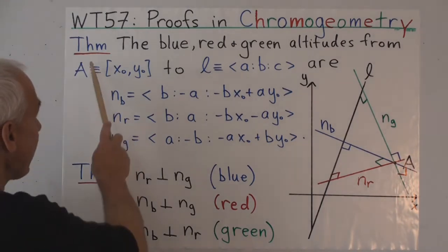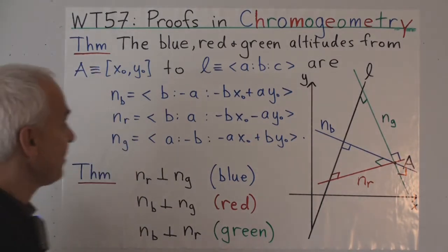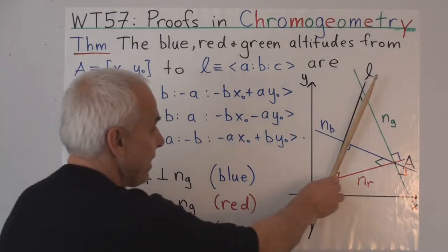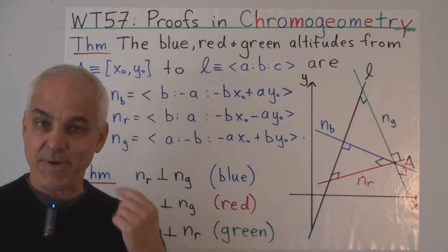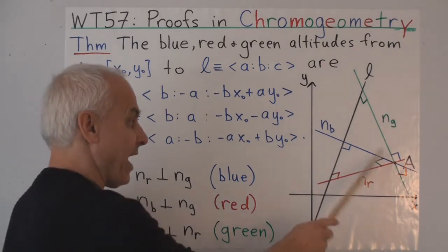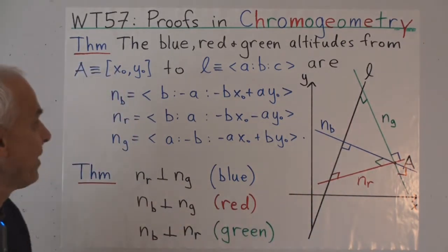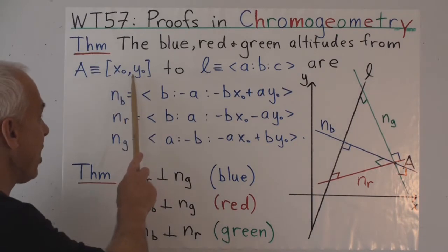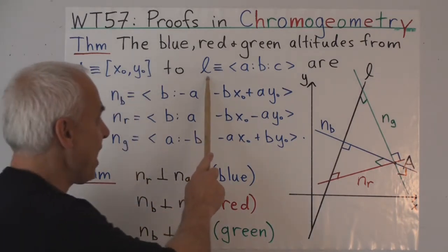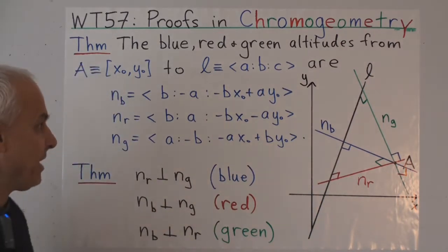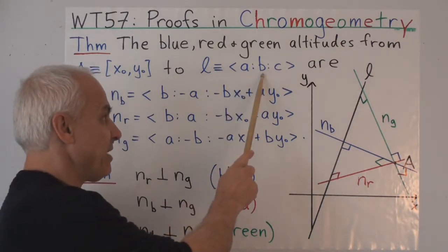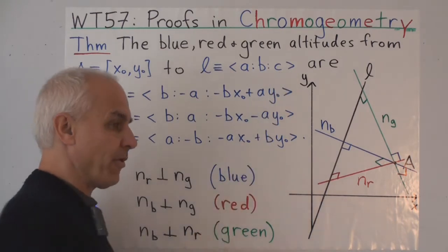The first theorem concerns a point A and a line L. We're interested in explicit formulas for the three altitudes from point A to line L. If point A is given by x naught, y naught, and if line L is given by A to B to C, I remind you that means line L has equation A x plus B y plus C equals zero.